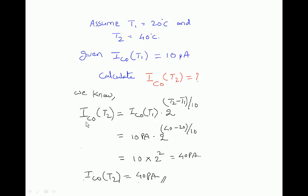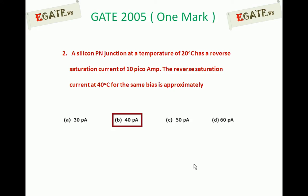In this equation, the unknown quantity is IC0(T2), which we want to calculate. IC0(T1) is given as 10 pico amperes, and 2^((40 − 20)/10) = 2^(20/10) = 2^2 = 4. So 4 × 10 = 40 pico amperes. The reverse saturation current becomes 40 pico amperes at 40 degrees centigrade. The correct answer is (b) 40 pico amperes. Thank you.